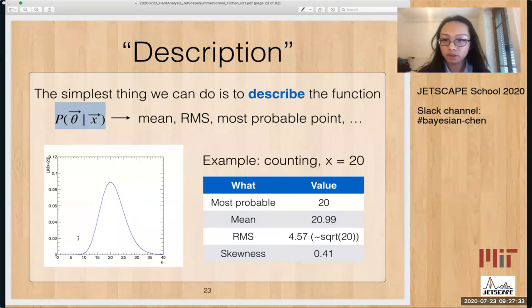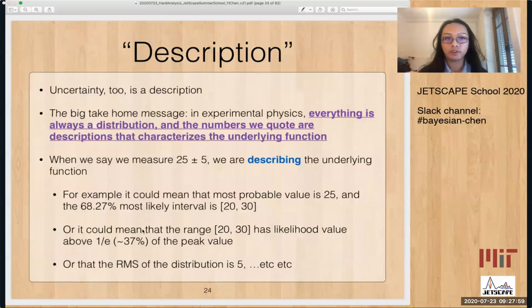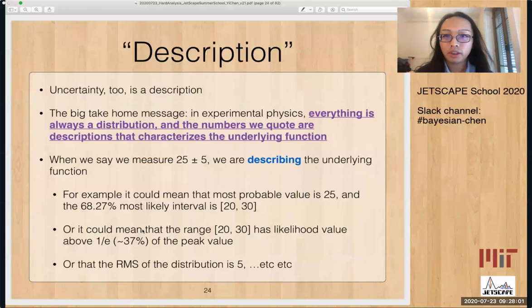For example, the mean, RMS, or what's the most probable point and so on. So an example here, I'm using the counting experiment example again, this time x is 20 and the likelihood looks like this. So then we can report that for this likelihood function the most probable value is 20, mean is about 21, the RMS 4.57, and there's also a skewness, it's not symmetric, it's 0.41. And this leads us to a very important point here actually.